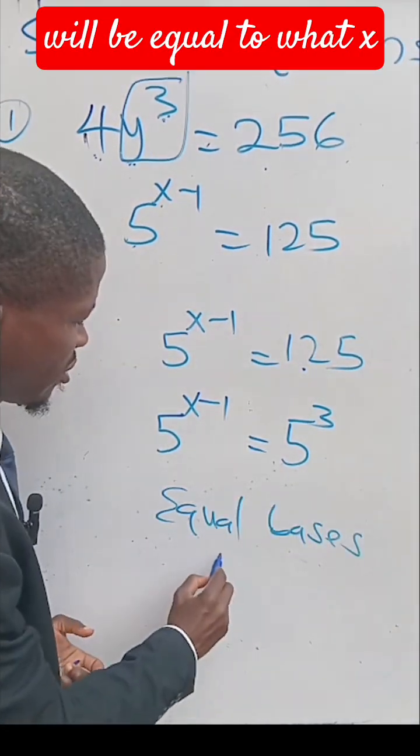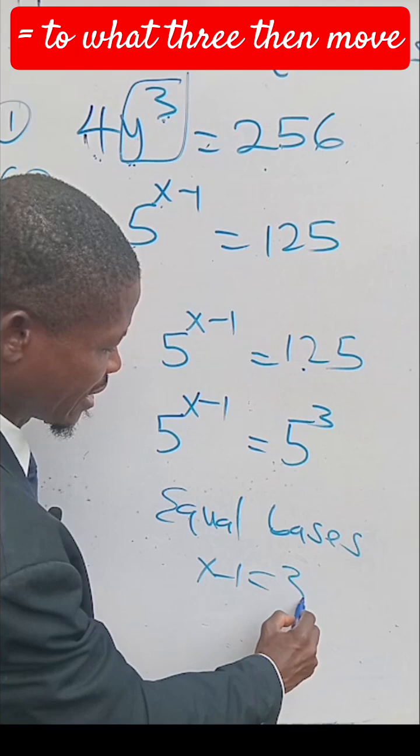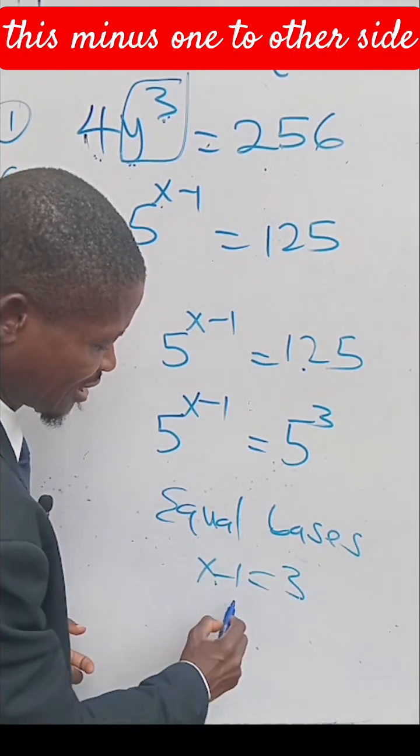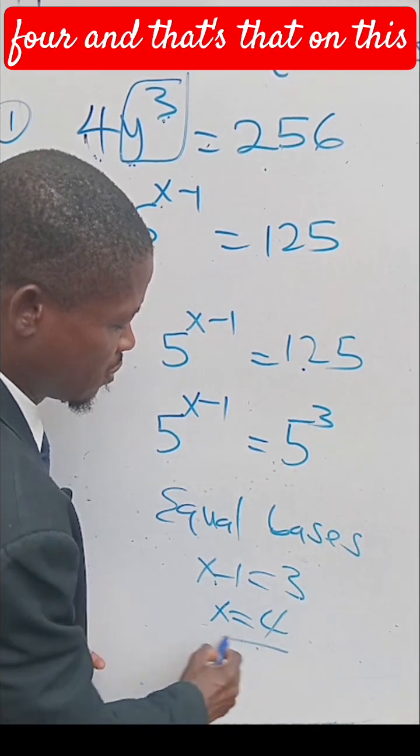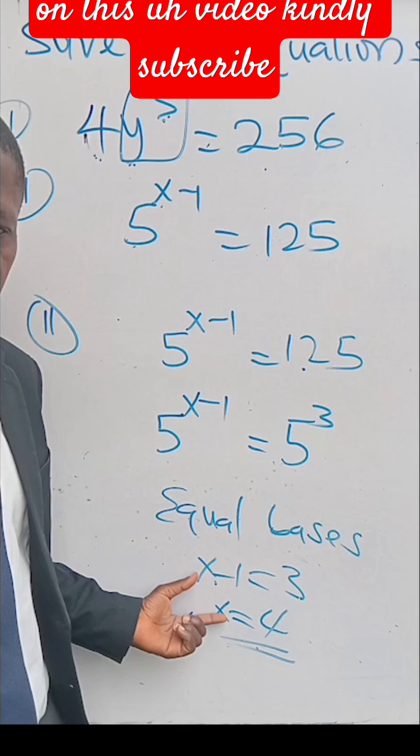So x - 1 = 3. Then move this minus 1 to the other side, so x = 4. And that's that.